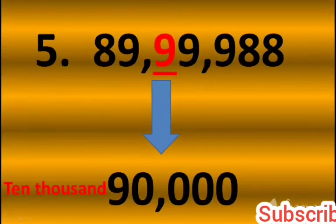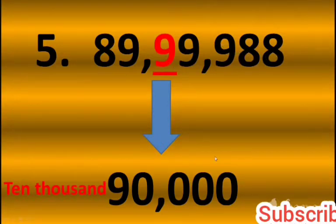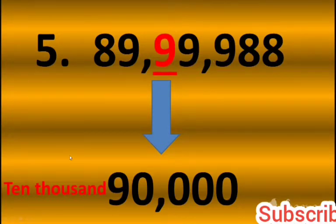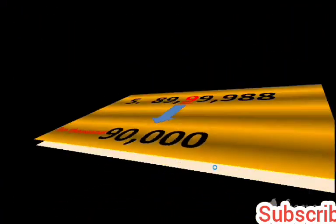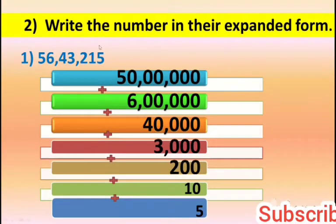Next question: 89,99,988. Positions are unit, 10, 100, 1000, and 10,000. Nine is placed on 10,000, so nine's place value is 90,000.